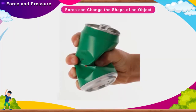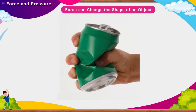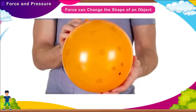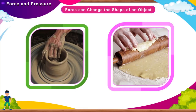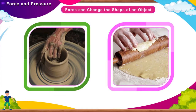Force can change the shape of an object. Force can change the shape of some objects or things, such as when an inflated balloon is pressed, clay is rolled on a potter's wheel, or dough is rolled with a rolling pin.